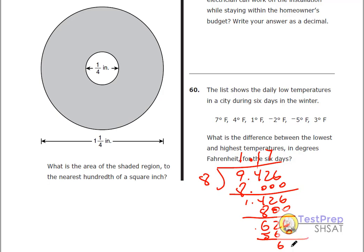So that leaves us 66 here, 8 goes into 66, 8 more times. So 1.178 for rounding to 100, round to the hundredths place, 1.18,